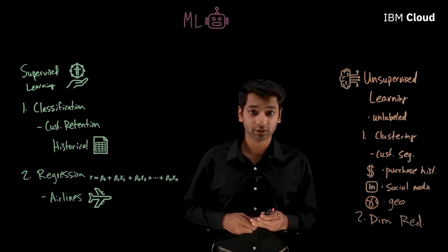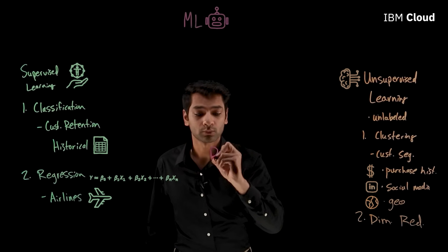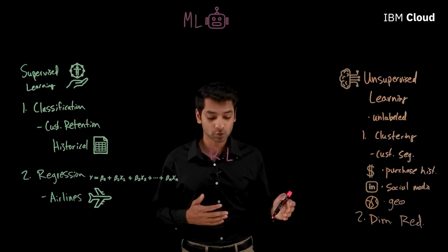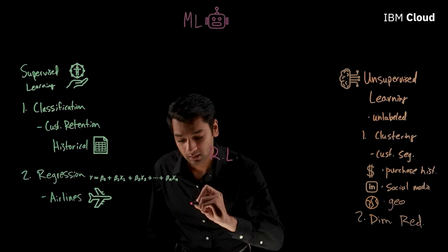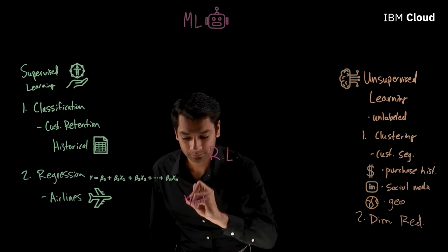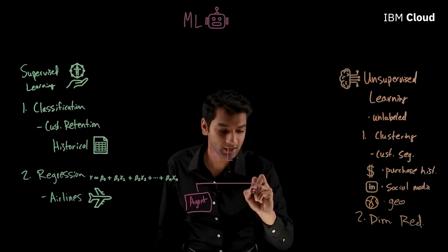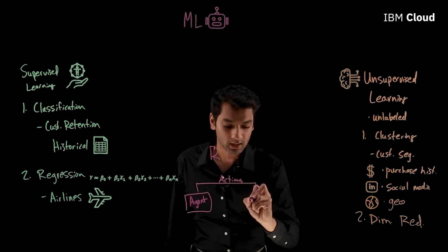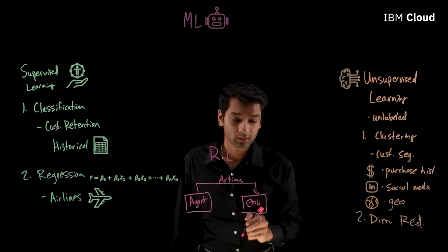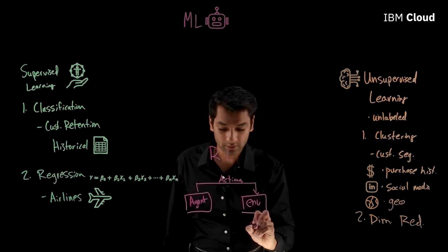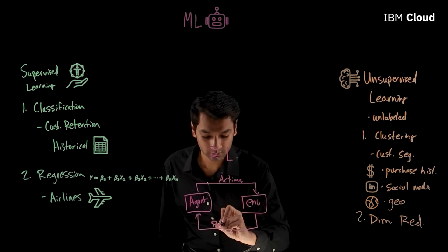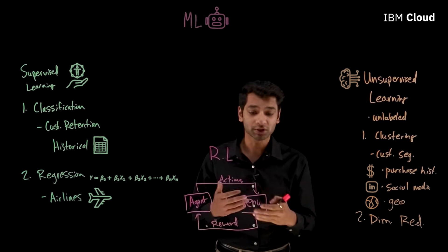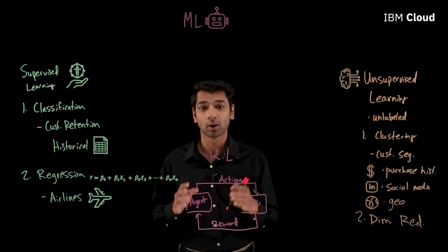So the last type of machine learning I want to talk about today is called reinforcement learning. Now, this is a form of semi-supervised learning where we typically have an agent or system take actions in an environment. Now the environment will then either reward the agent for correct moves or punish it for incorrect moves. And through many iterations of this, we can teach a system a particular task.